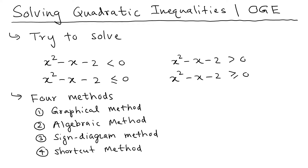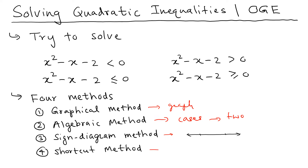When you want to solve a quadratic inequality there are four different methods. The first method is the graphical method, where you graph the function. The second is the algebraic method, where you consider cases. The third is the sign diagram method — my favorite, very useful — where you put the zeros and check the sign using test points. The fourth is the shortcut method, useful for advanced classes like calculus or pre-calculus. If you're in algebra, use one of the other methods because your teacher would like to see your steps.